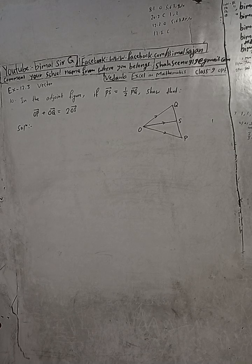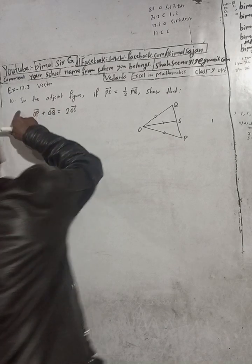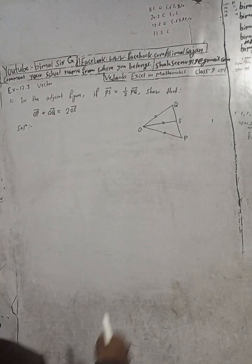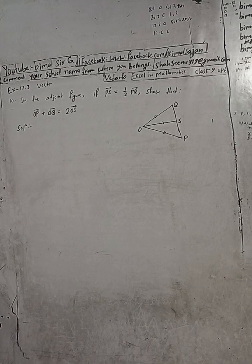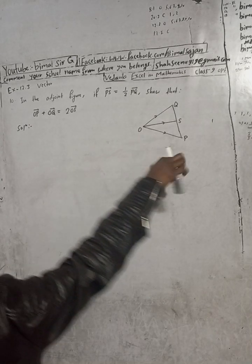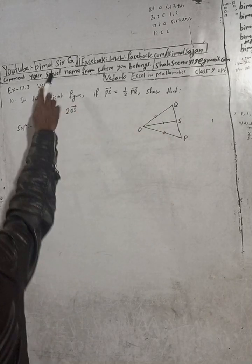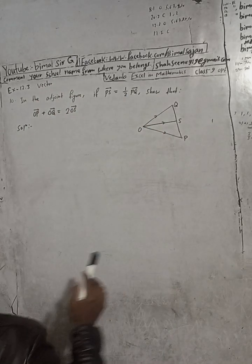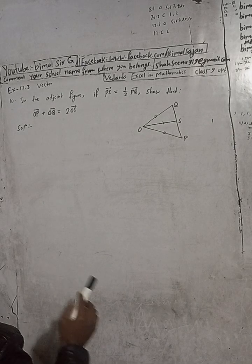This is now question number 10, exercise 12.3 vector chapter. Vedant Excel in Mathematics — this is OPT Mathematics class 9. Don't forget to check the playlist; in the playlist you get a lot of solutions.